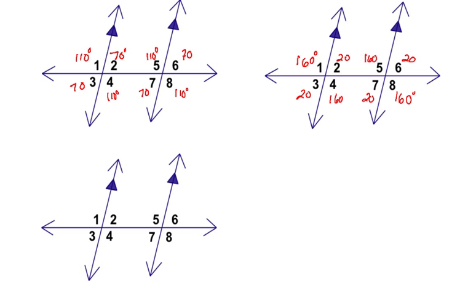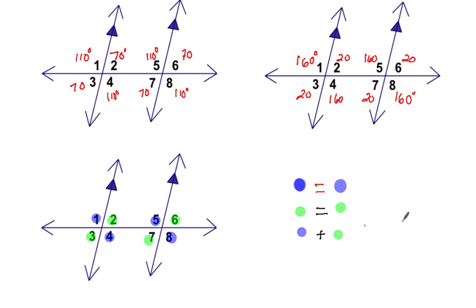There's a pattern here to pay attention to. In each case, one set of angles — 1, 4, 5, and 8 — were all the same value. And a second set — angles 2, 3, 7, and 6 — were also all equal to each other but a different value. Here's my question: if you take one angle from each group and add them up, what is their sum always going to be? 180 degrees. Some students like to color-code the diagram to see this pattern, and that's a relationship to pay attention to throughout geometry.